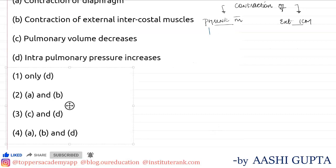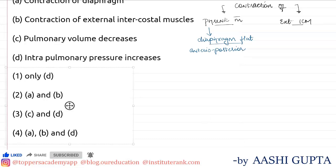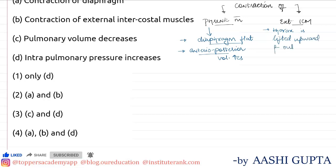When phrenic muscles contract, the diaphragm becomes flat. Due to the diaphragm becoming flat, the anterior-posterior volume increases. When the external intercostal muscles contract, the thorax is lifted upward and outward. Due to this lifting, the dorsal-ventral volume also increases.